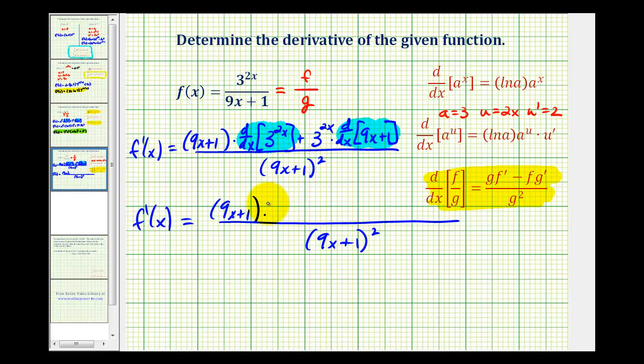So the derivative of 3 to the power of 2x will be natural log 3 times 3 to the power of 2x times u prime, which is 2, minus 3 to the power of 2x times the derivative of 9x plus 1, which is just 9.